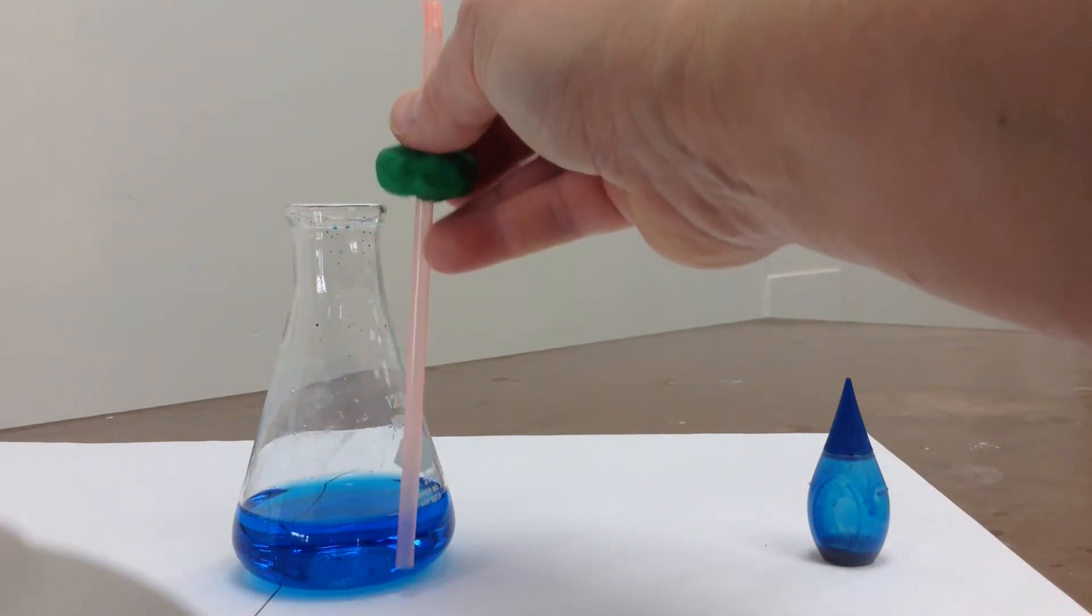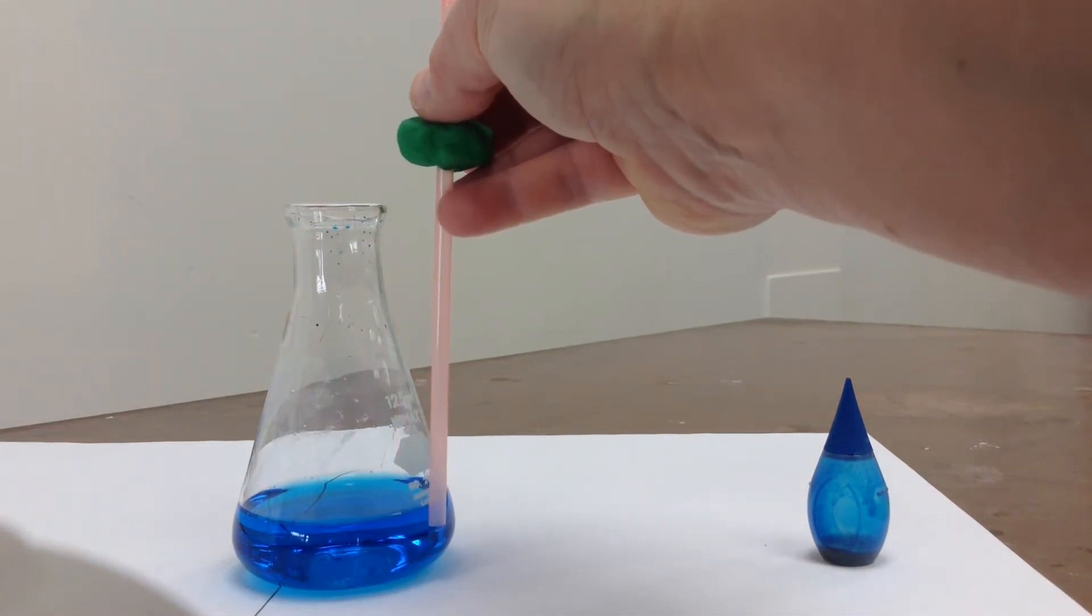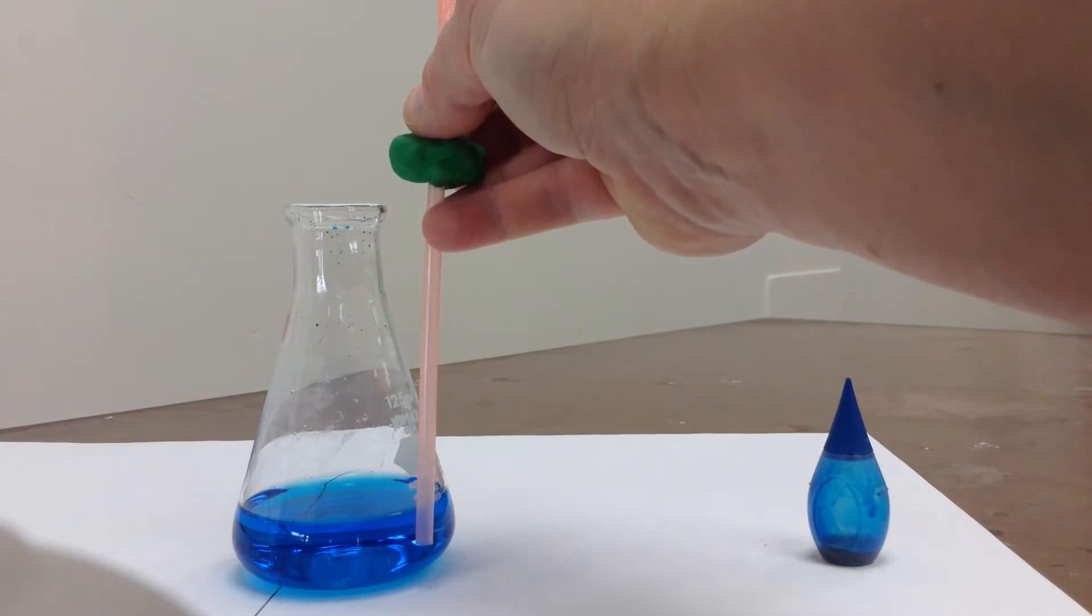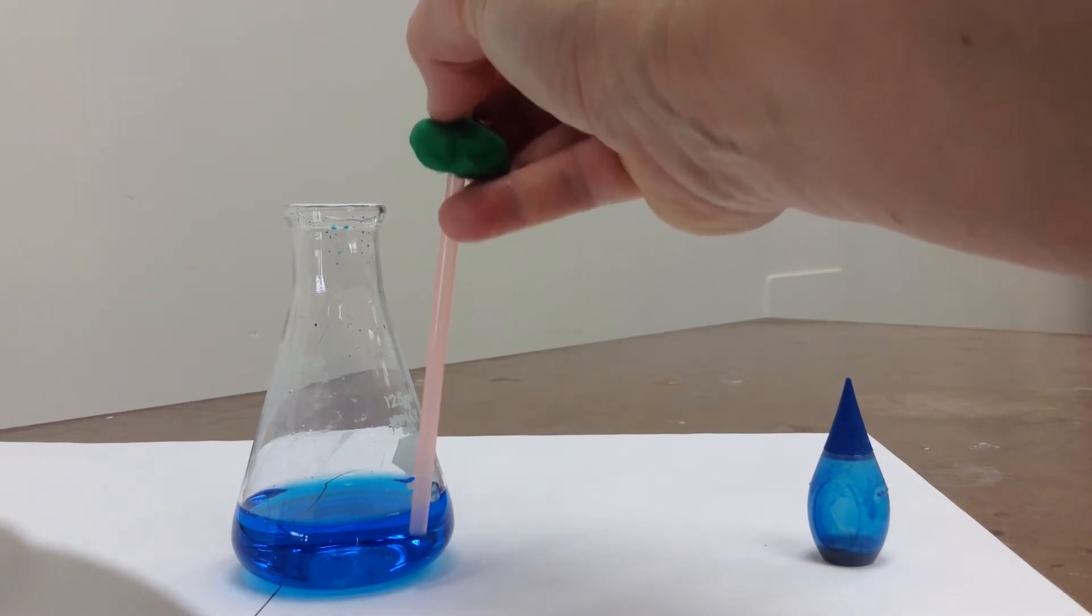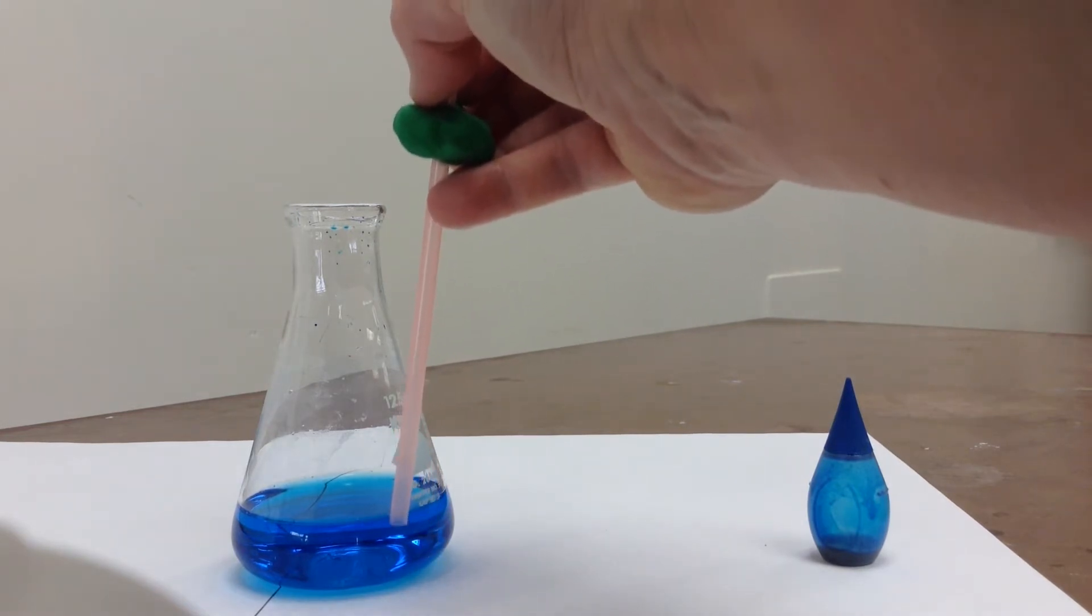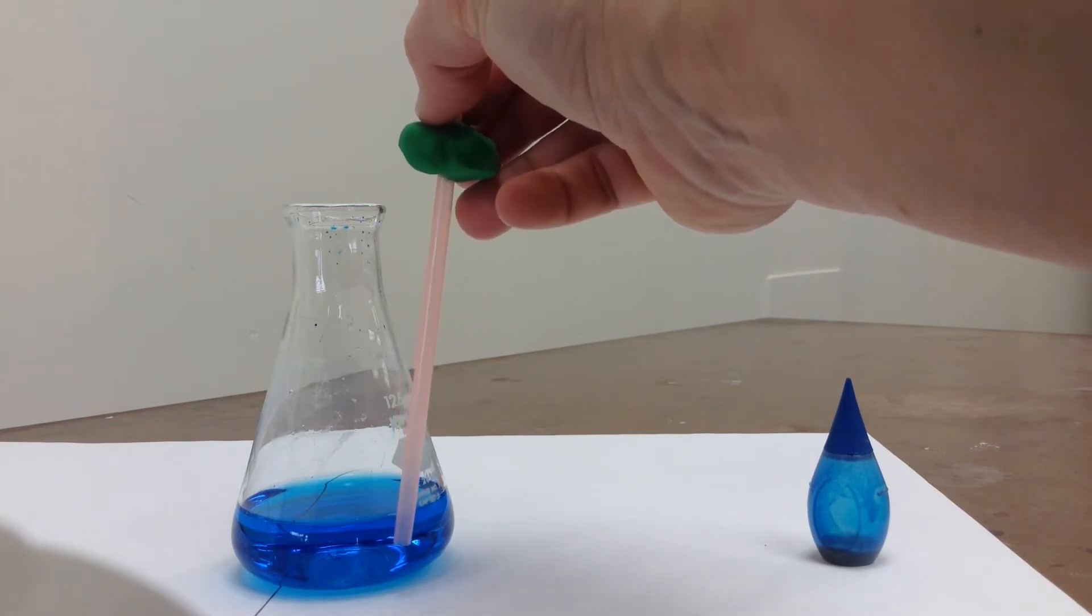The next thing that's really important is to have the straw near the bottom, but not at the bottom. It needs to be in the liquid, but not touching the bottom. If it's touching the bottom of your flask, the liquid won't be able to move freely up and down.